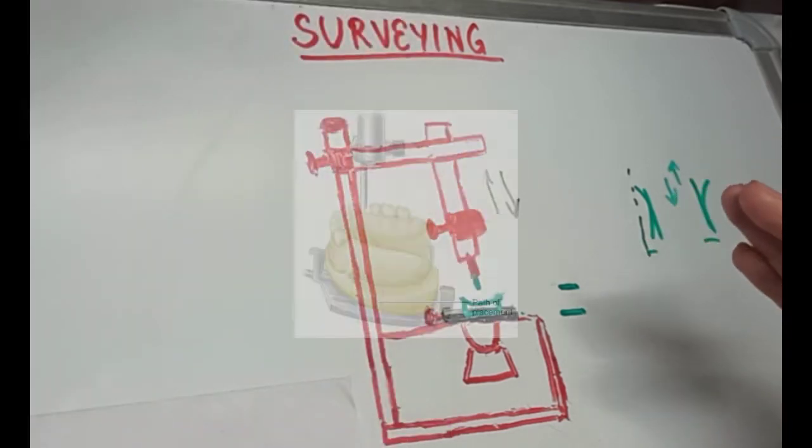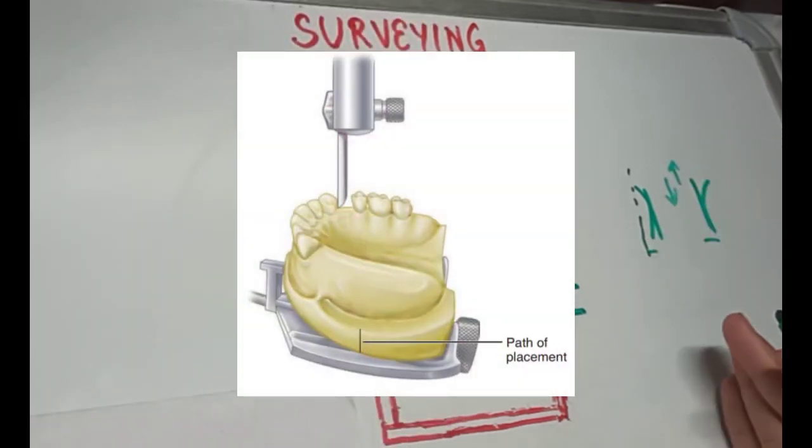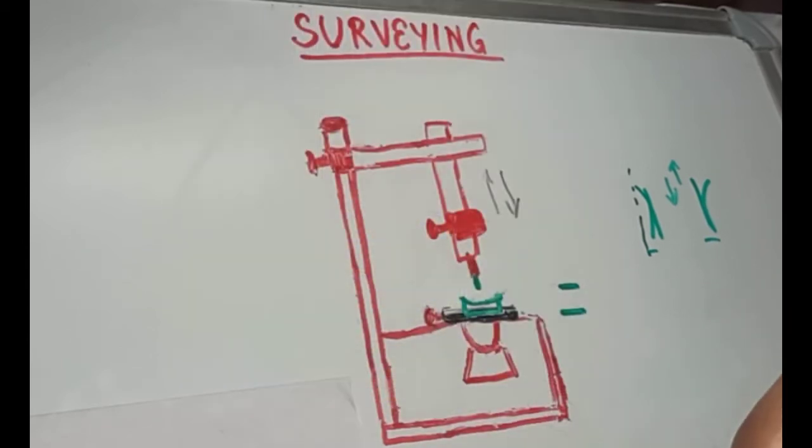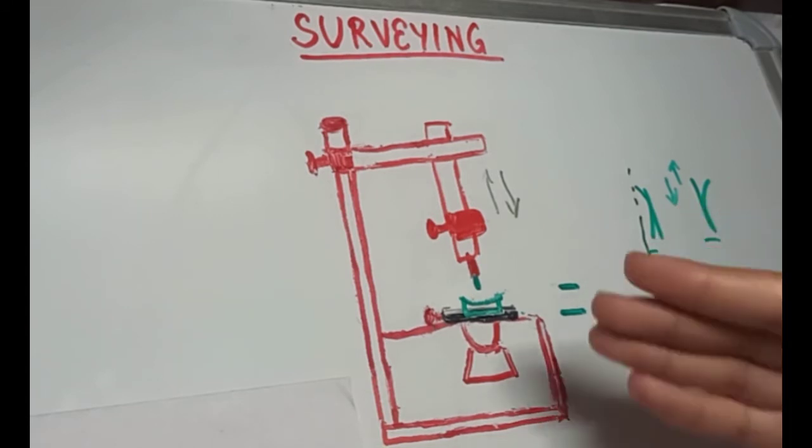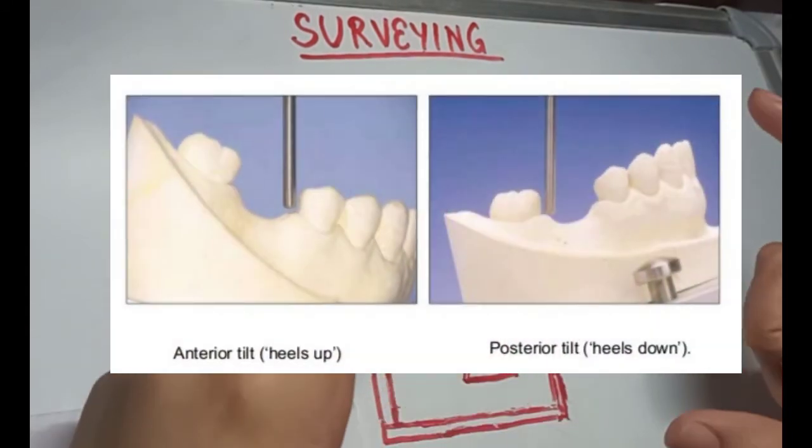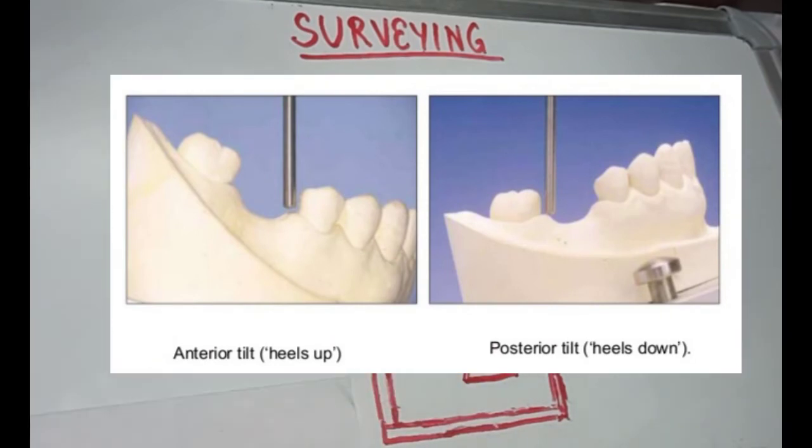That is, it will change the path of insertion. Now, we can tilt the cast according to the undercut that we need to eliminate. So, we can tilt the cast either anteriorly or posteriorly or right or left lateral directions.